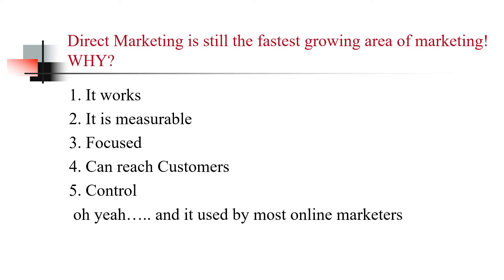Direct marketing is still the fastest growing area of marketing, and it's been this way for almost 30 years. Why? First, it works — use a marketing program that works. Second, it's measurable, and since it's measurable, it means it's accountable. I can perform a direct marketing campaign and find out how many people responded to it. With general advertising, the problem is we don't really know how many people watched the advertisement or how many were influenced by it.